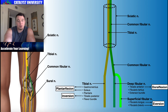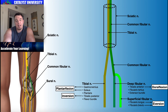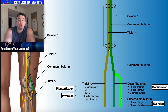We have the more laterally placed nerve in green, which is the common fibular or common peroneal nerve, and then the medially placed tibial nerve, still shown in yellow. Right here we see that bifurcation — the divergence of the sciatic nerve components. In green we have the common fibular nerve, and over here is the tibial nerve.